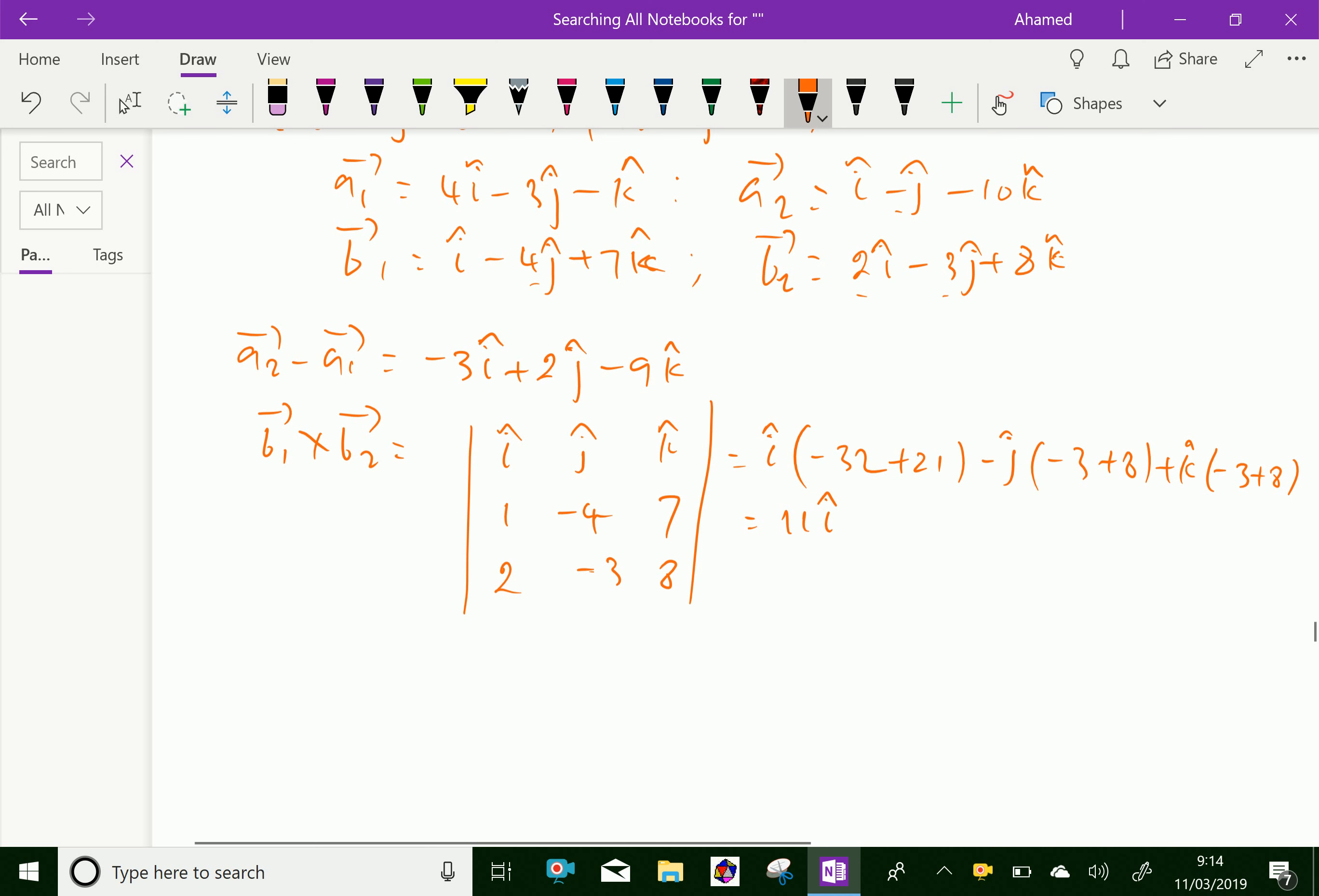For j, 8 minus 14 gives plus 6j. K is 5k, plus 5k.